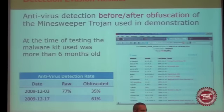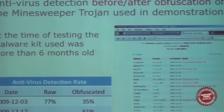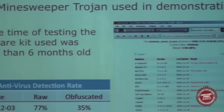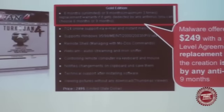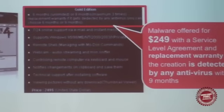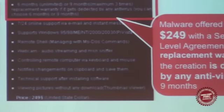I did the same with this demonstration. The trojan I created, back in December 2009, just the trojan by itself had a detection rate on VirusTotal of 77%. Then I obfuscated it using one of the crypto tools I also found in the underground — both tools were more than six months old at the time. The detection rate fell to 35%. I uploaded it every day to VirusTotal and after 14 days the detection rate went up to only 61%. I was shocked. I didn't pay anything for the latest version of malware tools. You can even have it as a service — Turkojan, a remote administrative tool, has a gold version for $250 with a 9-month replacement warranty if it is detected by any antivirus.